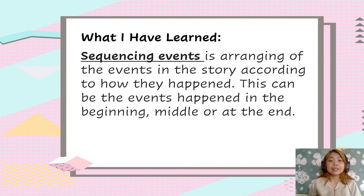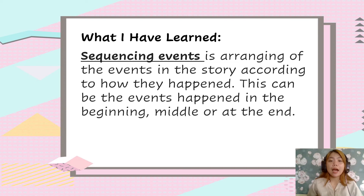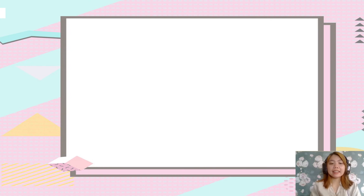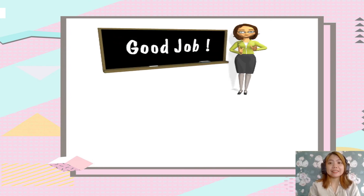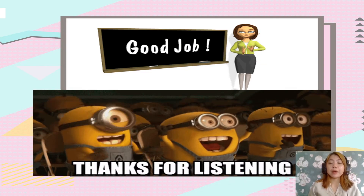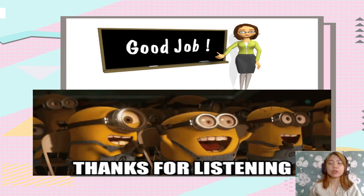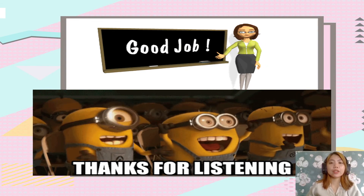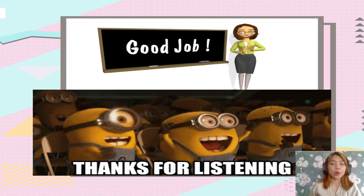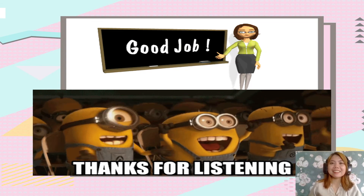Now class, don't forget: sequencing events is the arranging of the events in a story according to how they happen. This can be the events that happened in the beginning, middle, or at the end. That ends our lesson for today. Did you understand it very well? If not, you may go back to the lesson presented in your module. If today's lesson is very clear to you, congratulations! You may now answer the exercises in your module. See you again, kids, and good luck!